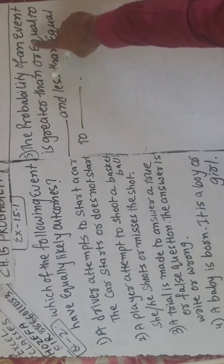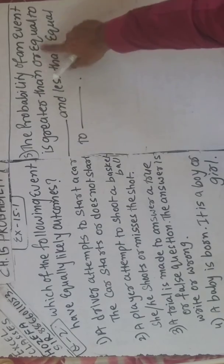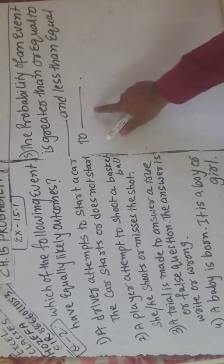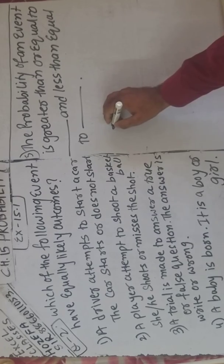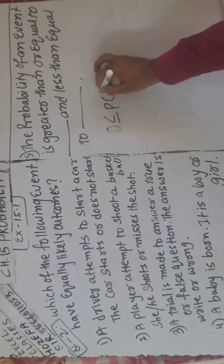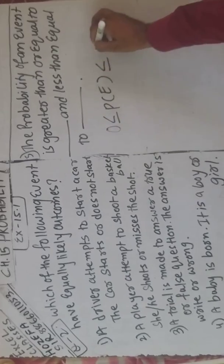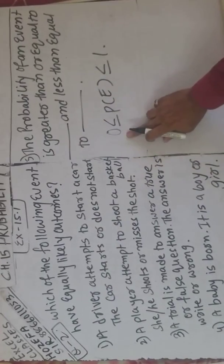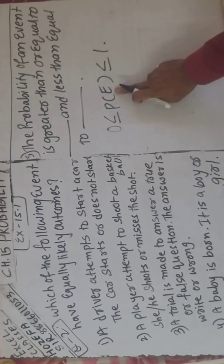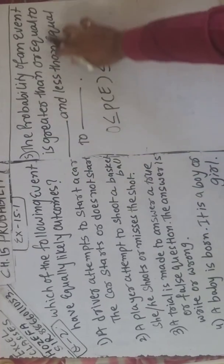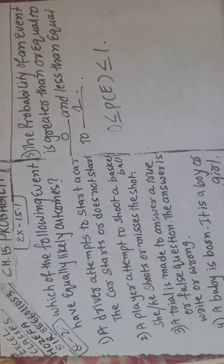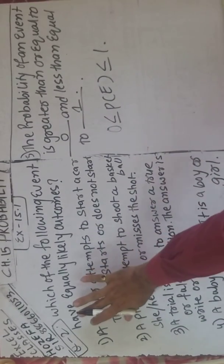The probability of an event is greater than or equal to dash and less than or equal to dash. Aap logo ko maine aage bataya tha ke probability ka answer always zero se greater hota hai aur one se less. That is: greater than or equal to zero and less than or equal to one.